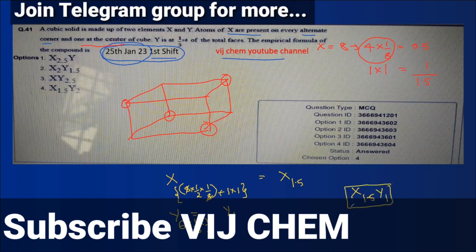So the total answer should be X 1.5 Y 1. But if you check here there is no option like that - X 1.5 Y 1, nowhere option is given.